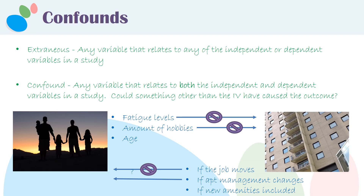What if the apartment management changes? If the apartment management changes, it is likely to influence whether somebody moves out of the apartment complex. But is it likely to influence whether those people have children? The answer is probably not. So that's probably just an extraneous variable.